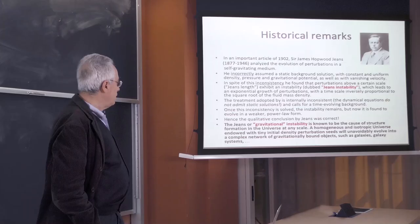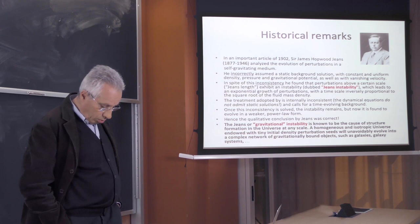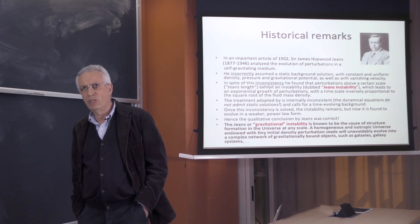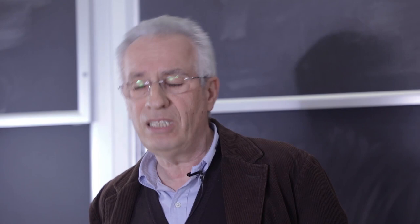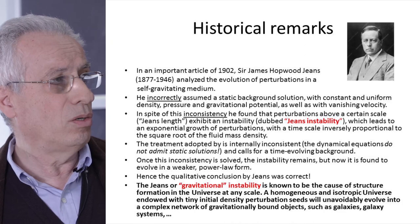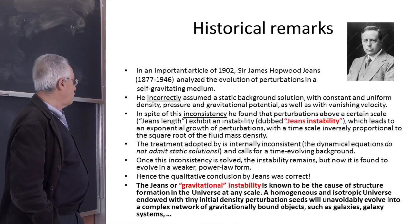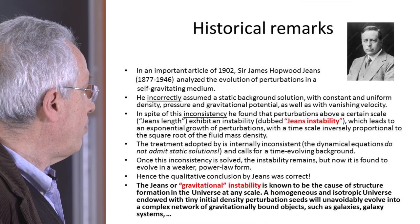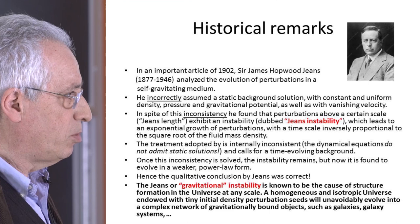Especially the last statement cannot make sense, because it is impossible to have a non-zero mass density and at the same time a constant gravitational potential. In spite of that, Jeans was able to find very important and interesting results. What Jeans found was an exponential growth of perturbations above a certain scale that we now call the Jeans scale. The qualitative result is correct, though the quantitative result needs correction. The Jeans gravitational instability is known nowadays to be the cause of structure formation in the universe at any scale.